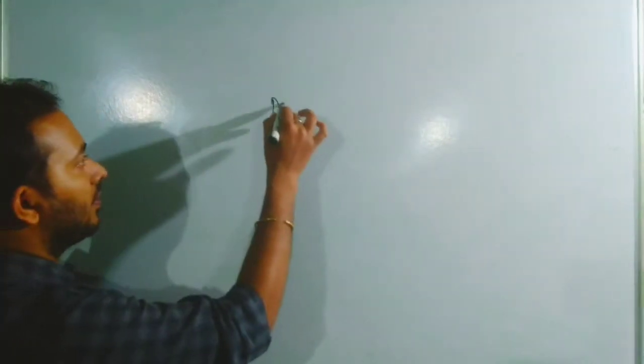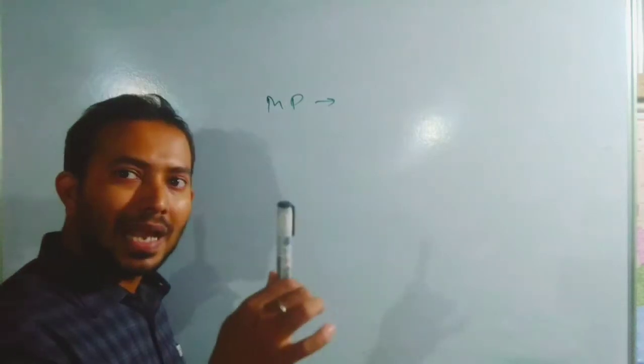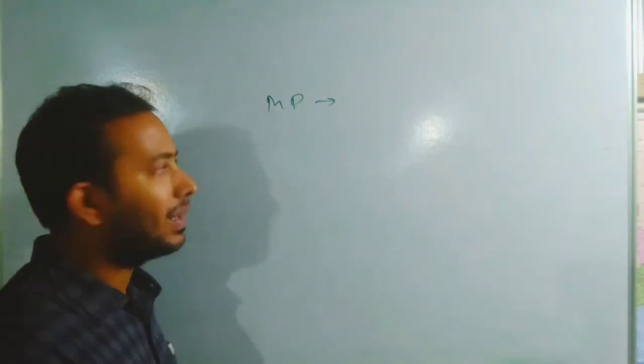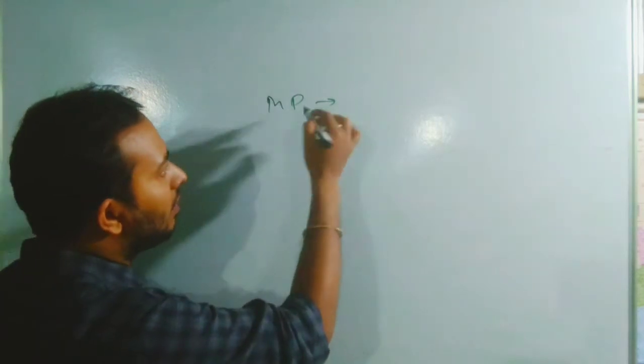So here we are, mark price. Mark price means the price written on the particular item. That means maximum retail price we can say that. So that is our mark price.